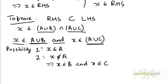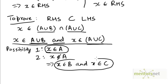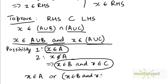So we have these two possibilities. If x belongs to both of these sets, either x belongs to A, or it does not belong to A. If it does not belong to A, it must belong to both B and C. This means that either x belongs to A, or it belongs to both B and C — in other words, it belongs to B intersection C.